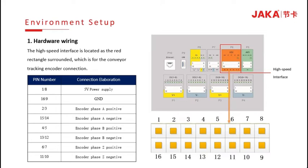Pin 16 and pin 9 are for the ground connection. Pin 2 and pin 3 are for encoder phase A positive. Pin 14 and pin 15 for phase A negative. Pin 4 and pin 5 are for encoder phase B positive connection. Pin 12 and pin 13 are for encoder phase B negative connection. Pin 6 and pin 7 are for encoder phase Z positive, and pin 10 and pin 11 are for encoder phase Z negative connection.